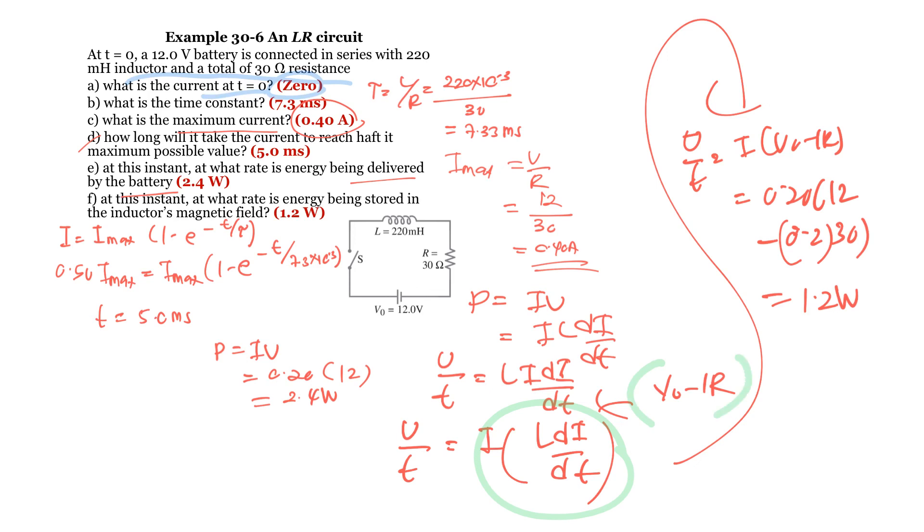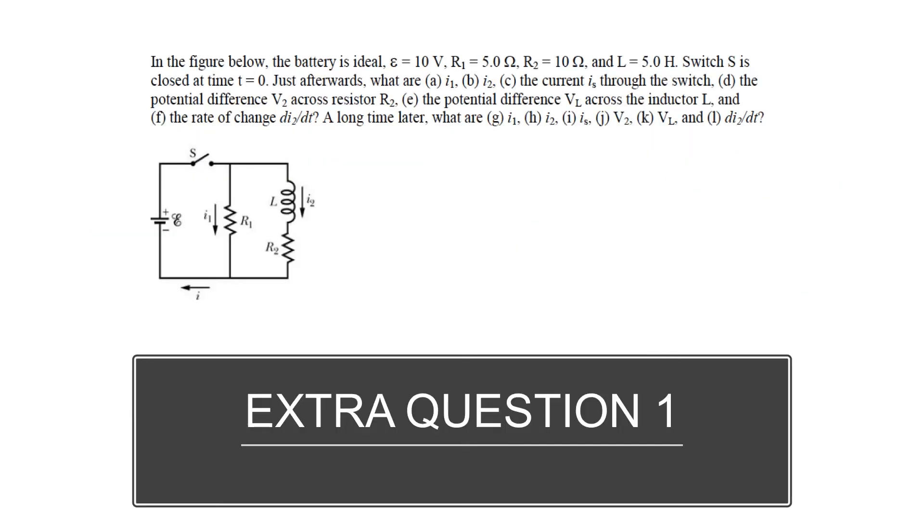For the rate of energy stored in the inductor's magnetic field: using P = I·L(dI/dt), and recalling that L(dI/dt) = V₀ - IR, we get P = I(V₀ - IR) = 0.2(12 - 0.2×30) = 1.2 W.